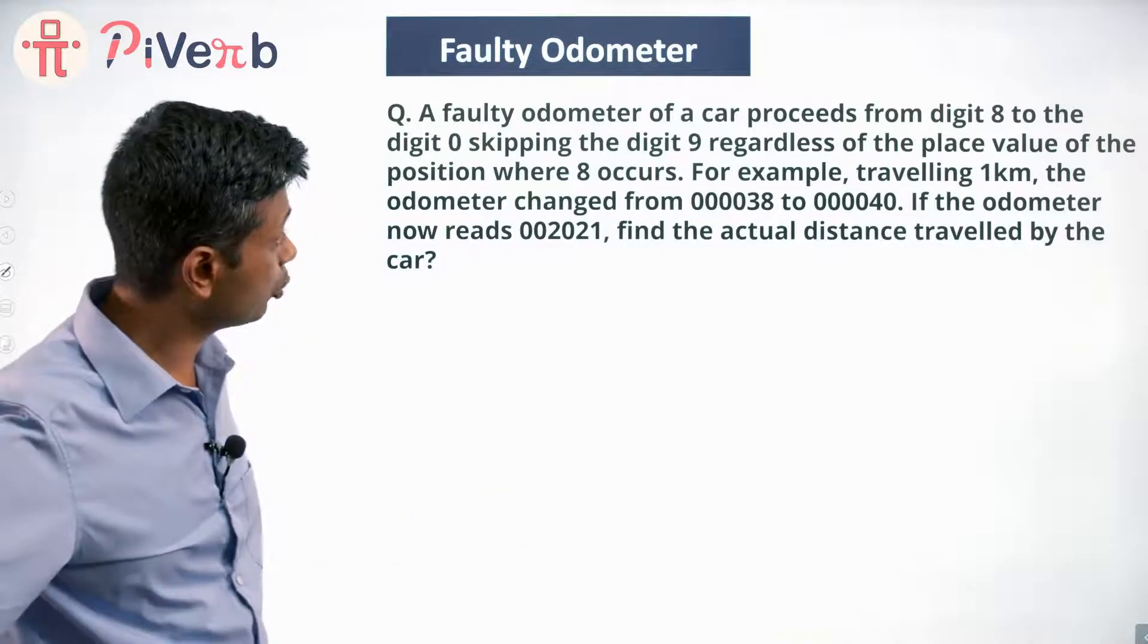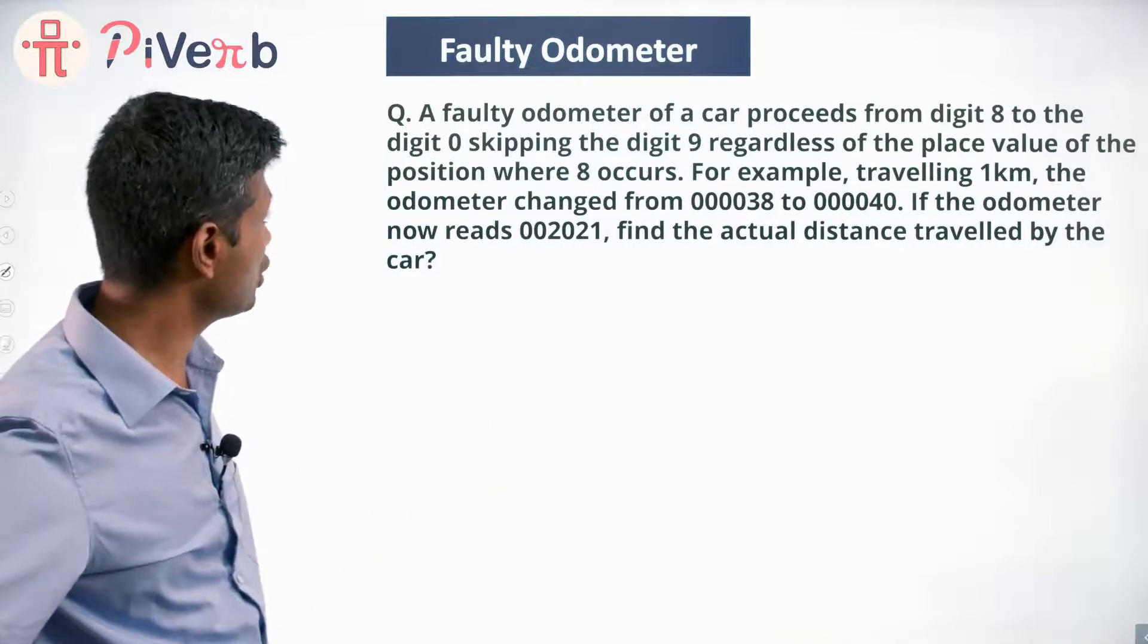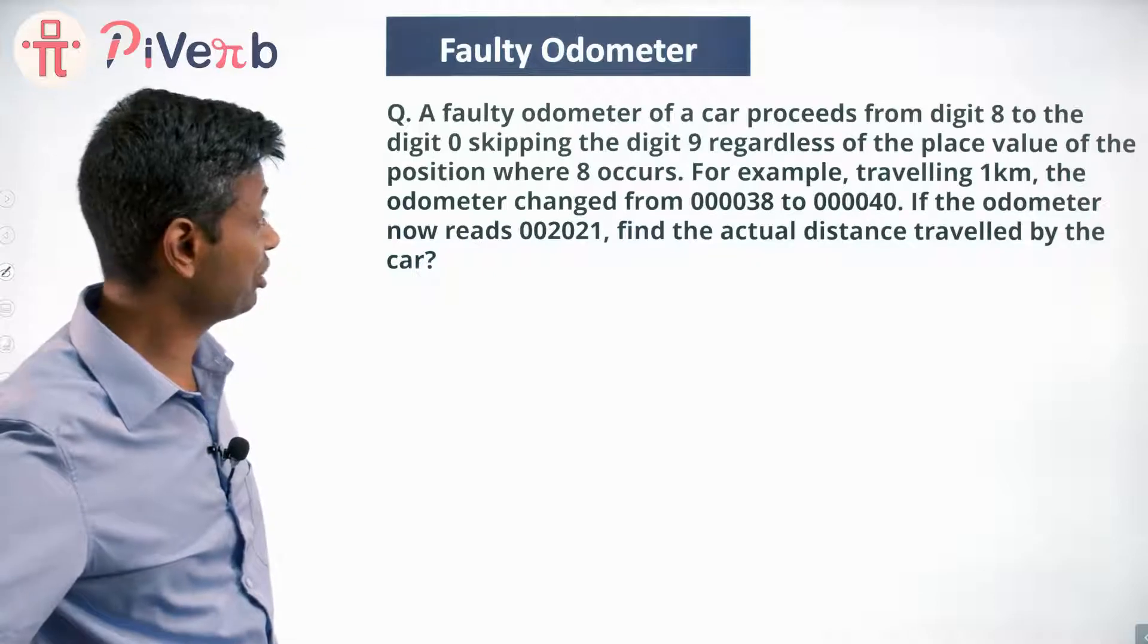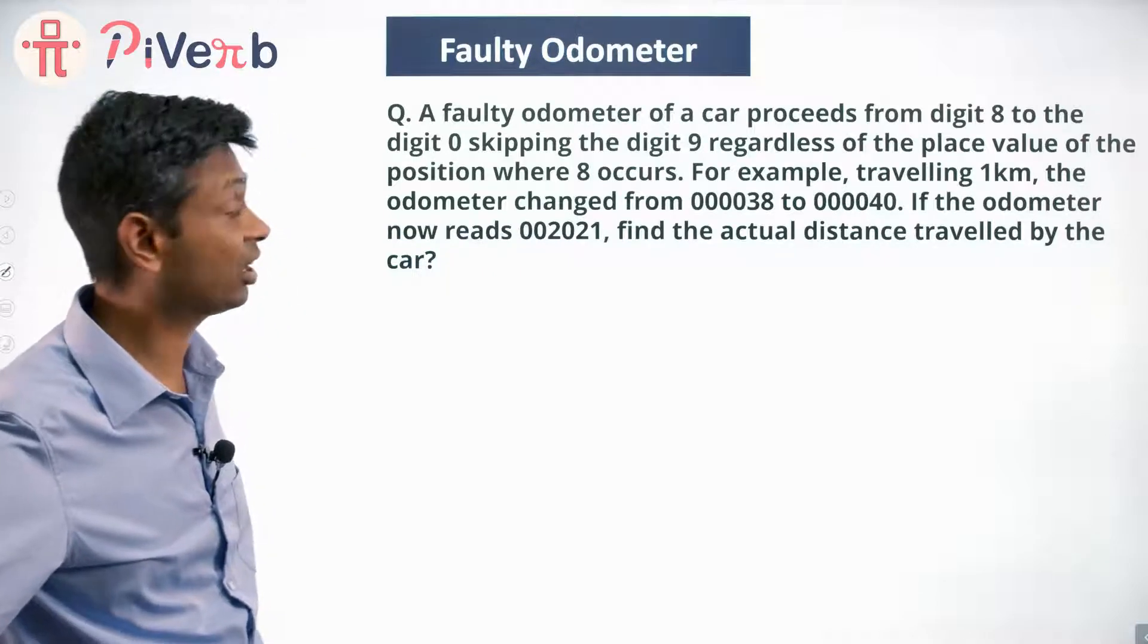A faulty odometer of a car proceeds from digit 8 to the digit 0, skipping the digit 9 regardless of the place value of the position where 8 occurs.